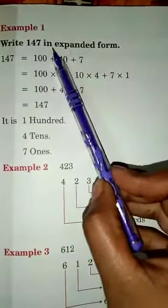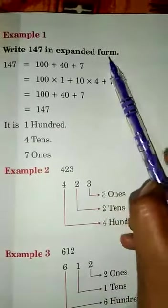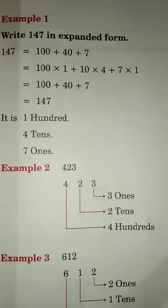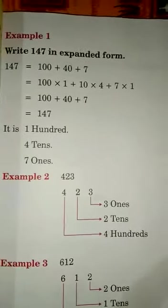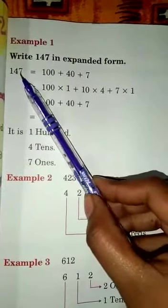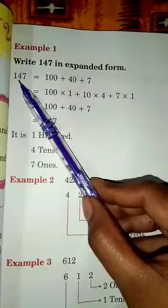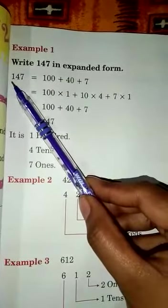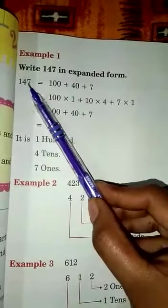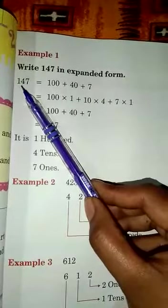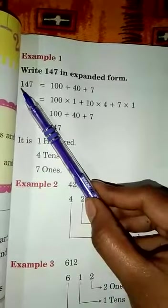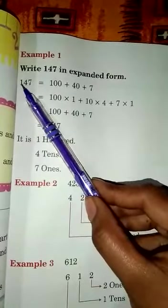Write 147 in expanded form. How we will write? Look, 147. First, we will write ones. Ones place 7, in tens place 4, and in hundred place 1. Seven ones, four tens means 40. Then, one hundred means 100, one in hundred place.